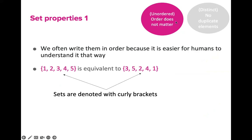Let us start with the unordered property. Unordered means the order of the elements does not matter. Sometimes we write them in order because it is easier for humans to understand, but that is not required. For instance, a set containing elements 1, 2, 3, 4, and 5 is equivalent to a set containing 3, 5, 2, 4, and 1. These two sets have the same elements listed in different order, but we consider them as equivalent sets. Sets are denoted with curly brackets and elements are separated by commas.